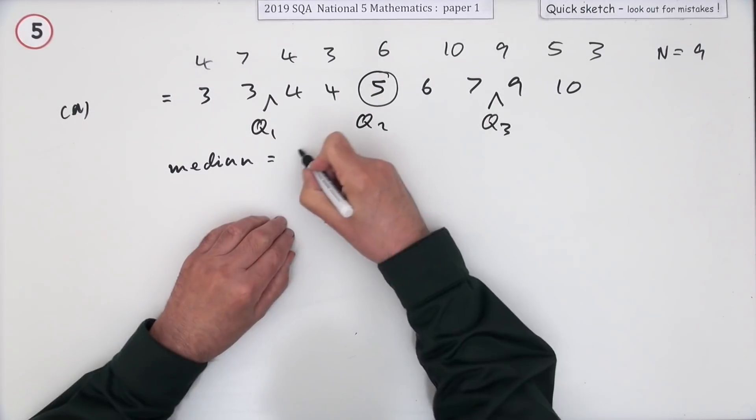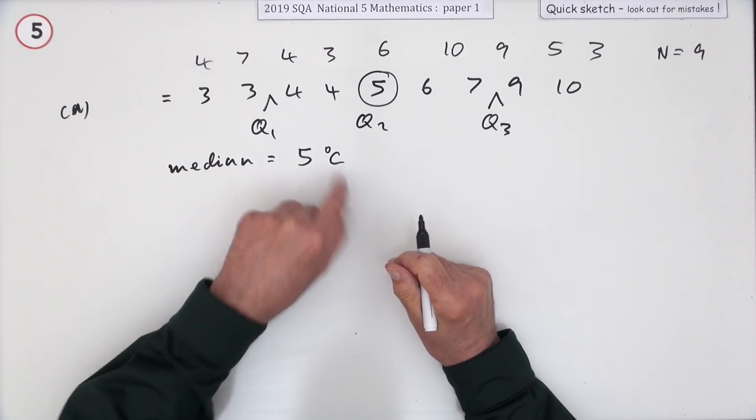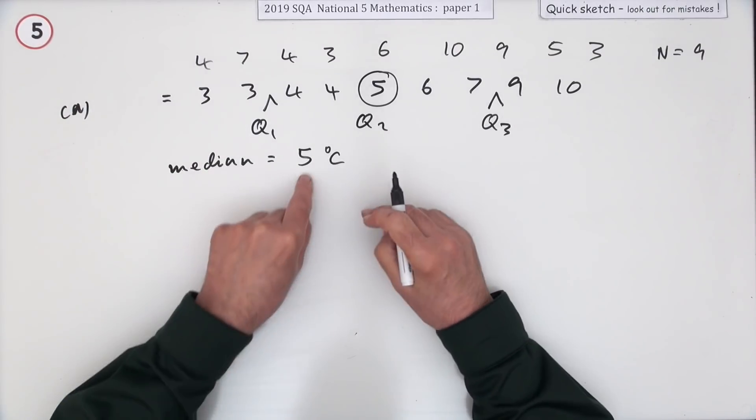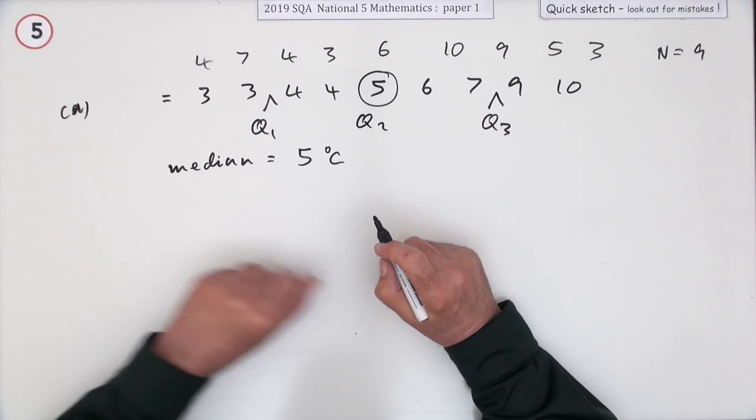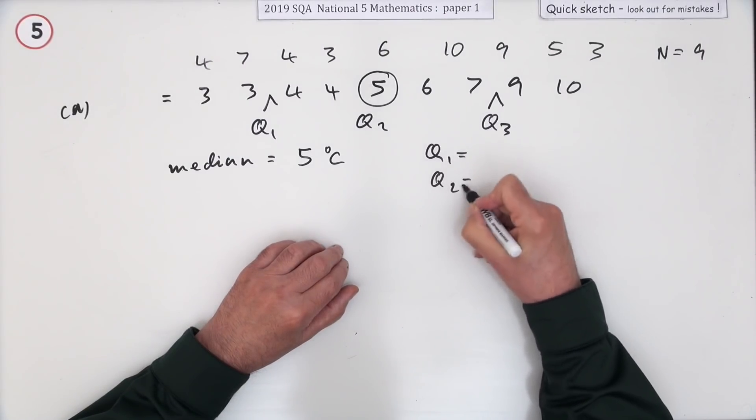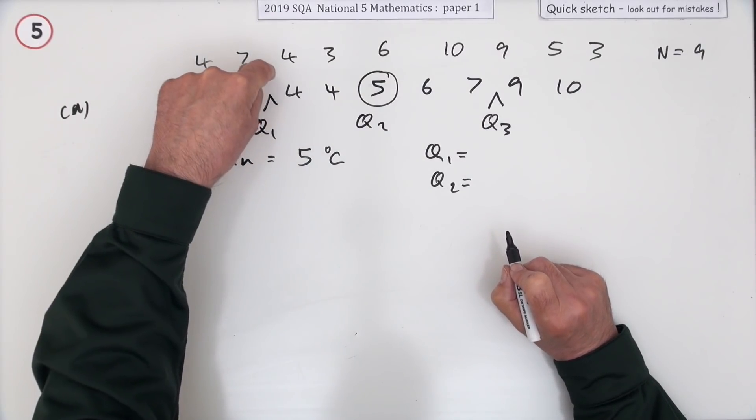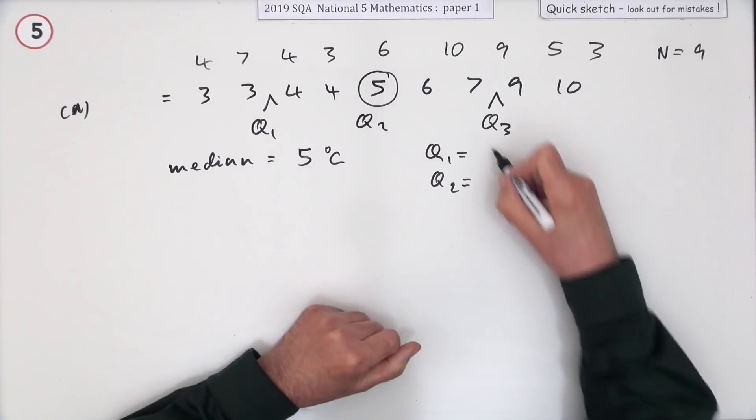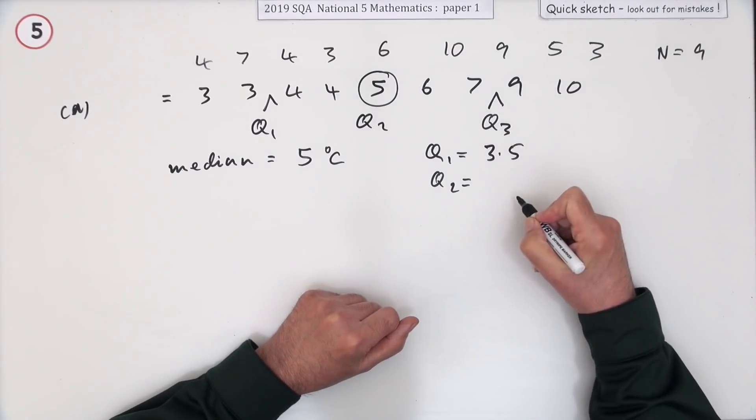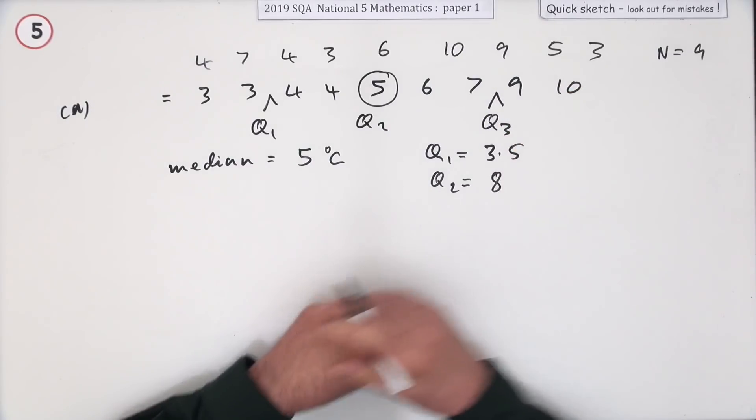Median, or can you just write Q2, is 5. But that was actually degrees centigrade. Not sure if they're going to penalize you or not for not putting units in. Probably 5 would do. Now, for the semi-interquartile range, I'll need to identify the quartiles. I'm just going to put the numbers down. Now, it's not there. So you take what would be in between them. Halfway between a 3 and a 4 would be a 3.5. Halfway between a 7 and a 9, that's easy. That's an 8.